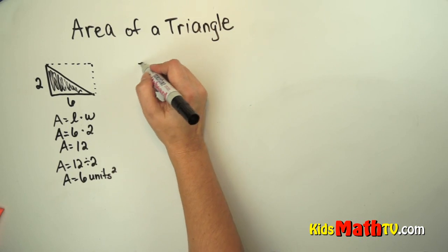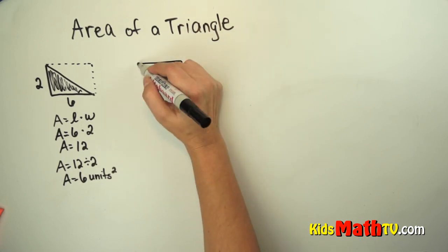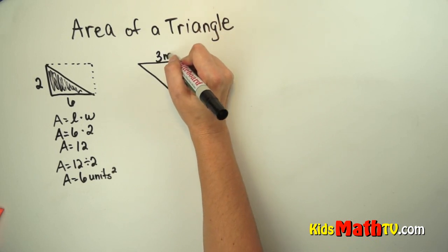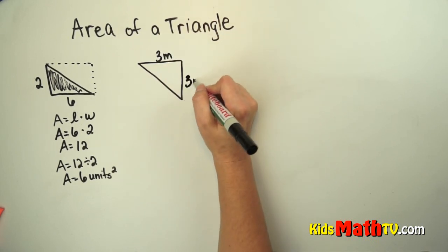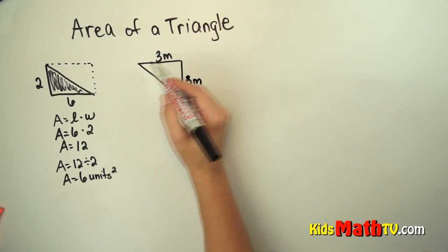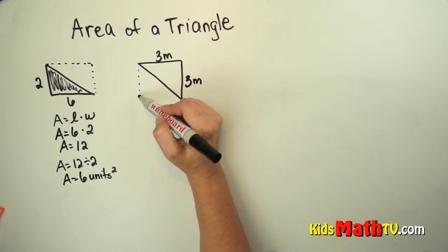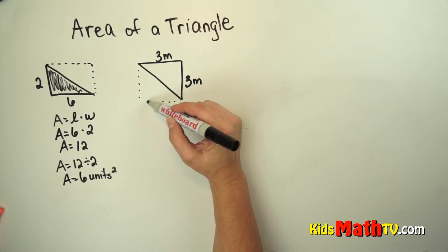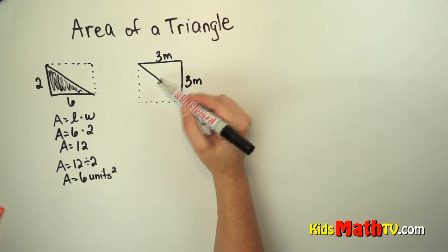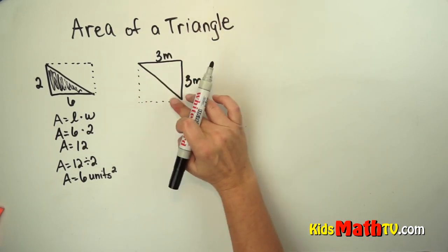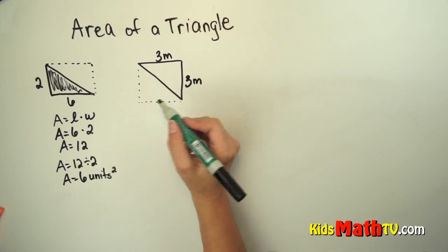If we were to try another one, let's try this one. We'll call that 3 meters and 3 meters. This is a triangle. We can, however, find the area of a rectangle that would be created by 2 of these triangles. If I were to flip that over right there, it would be the same shape, same size, which creates this rectangle.